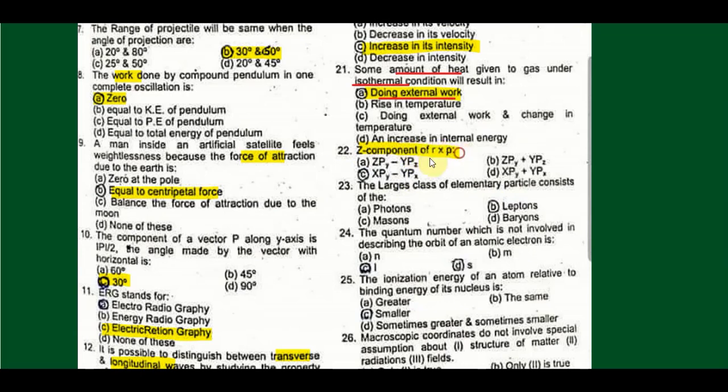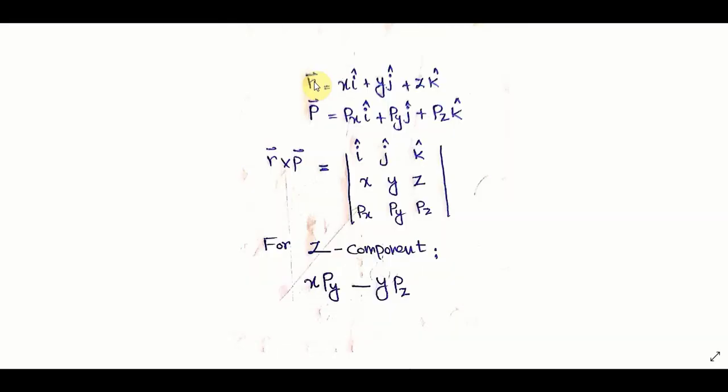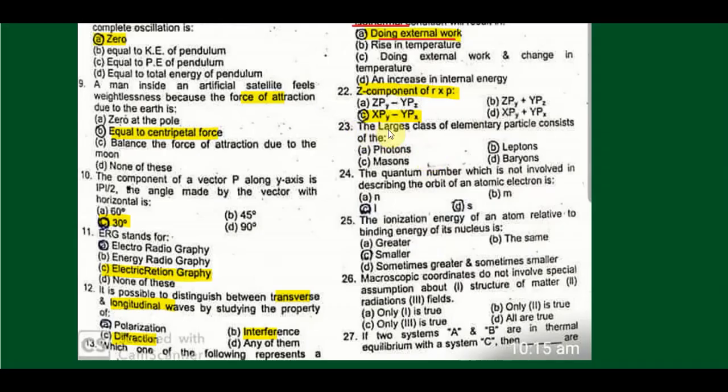The z component of r cross p: r is a position vector which can be represented in our three-dimensional space as xi + yj + zk. Similarly, momentum can be written as px*i + py*j + pz*k unit vectors. r cross p we will write in determinant form, and for the z component we will solve it out. Again there is a typing mistake here according to the original paper.